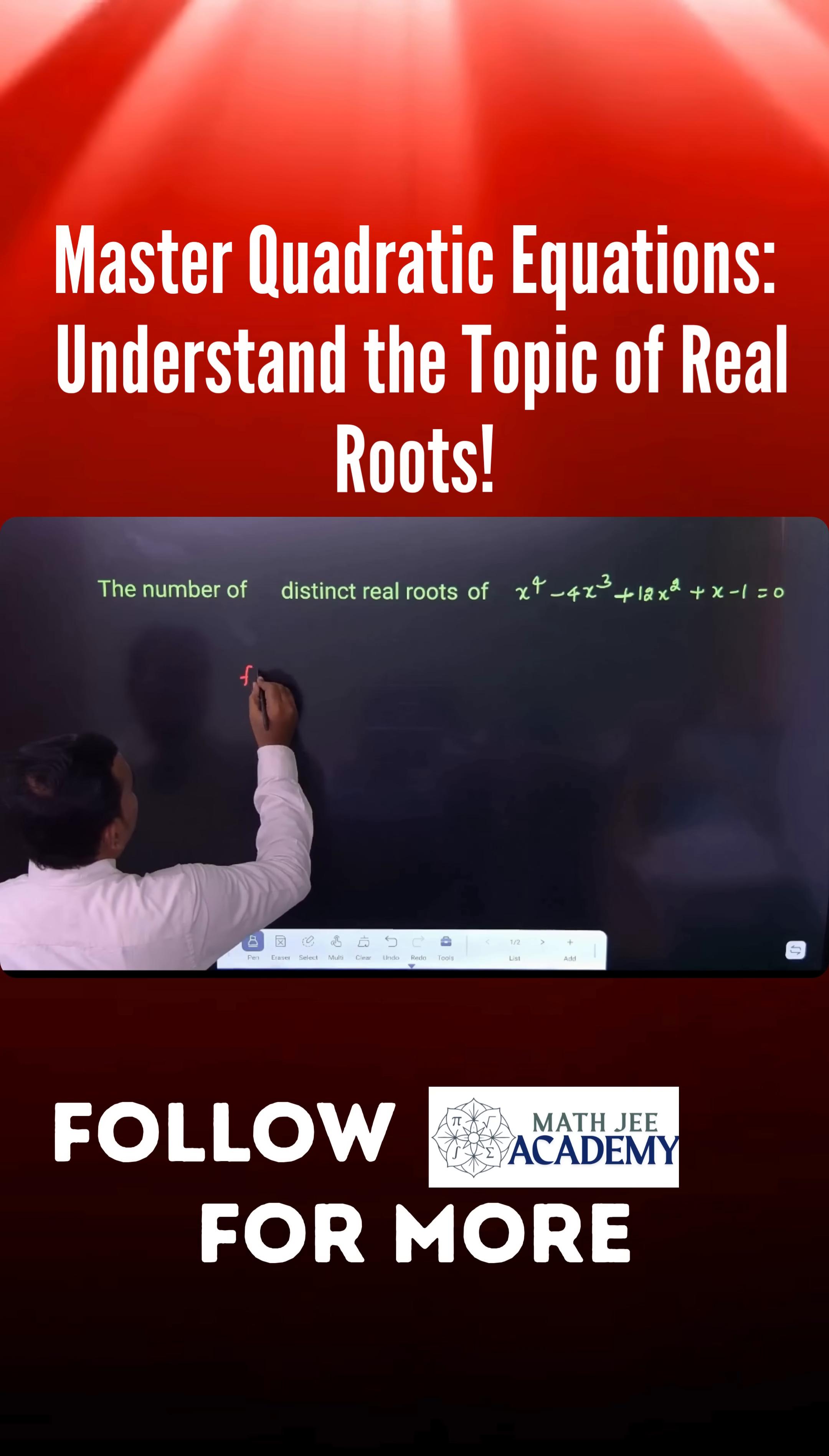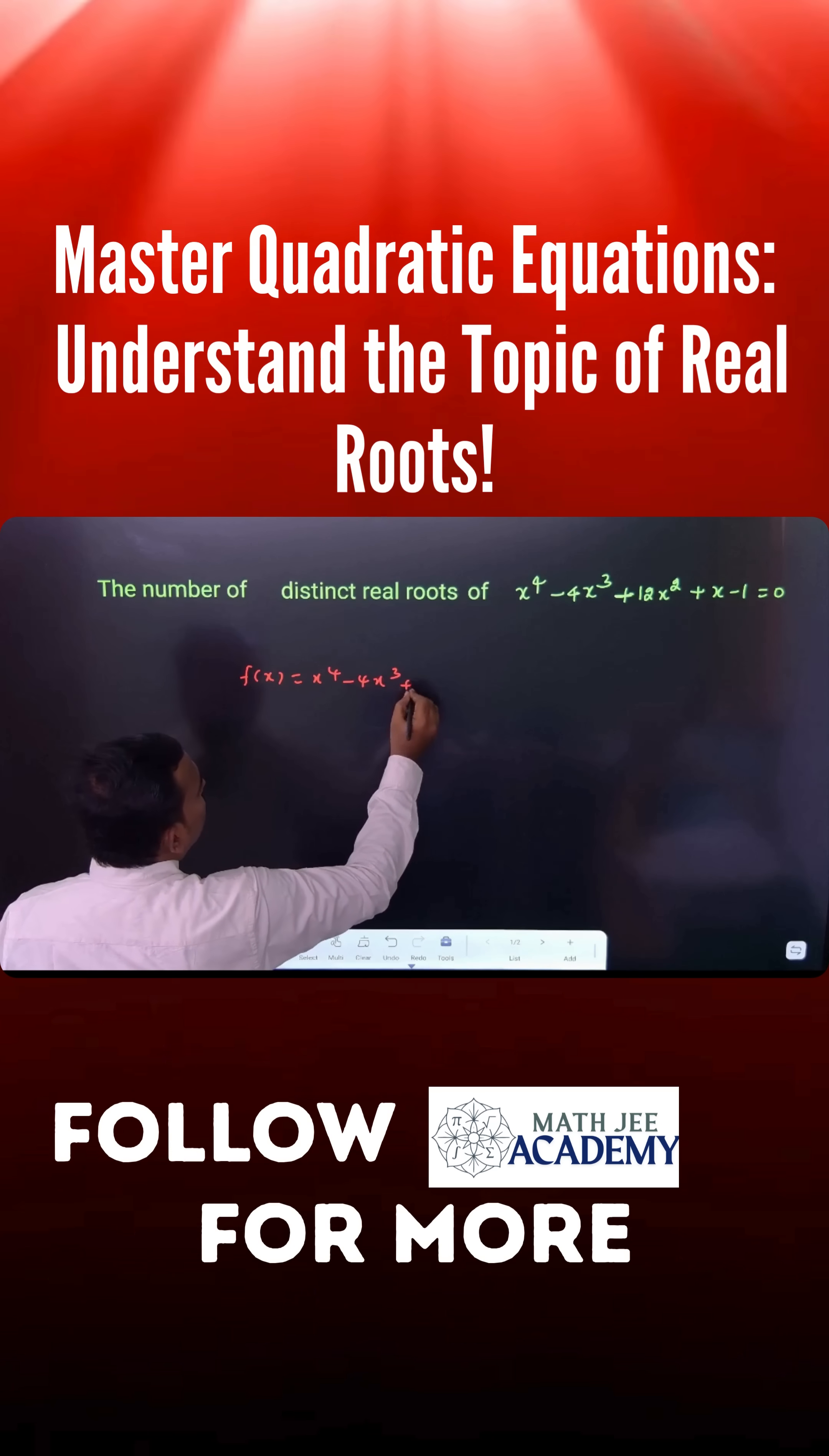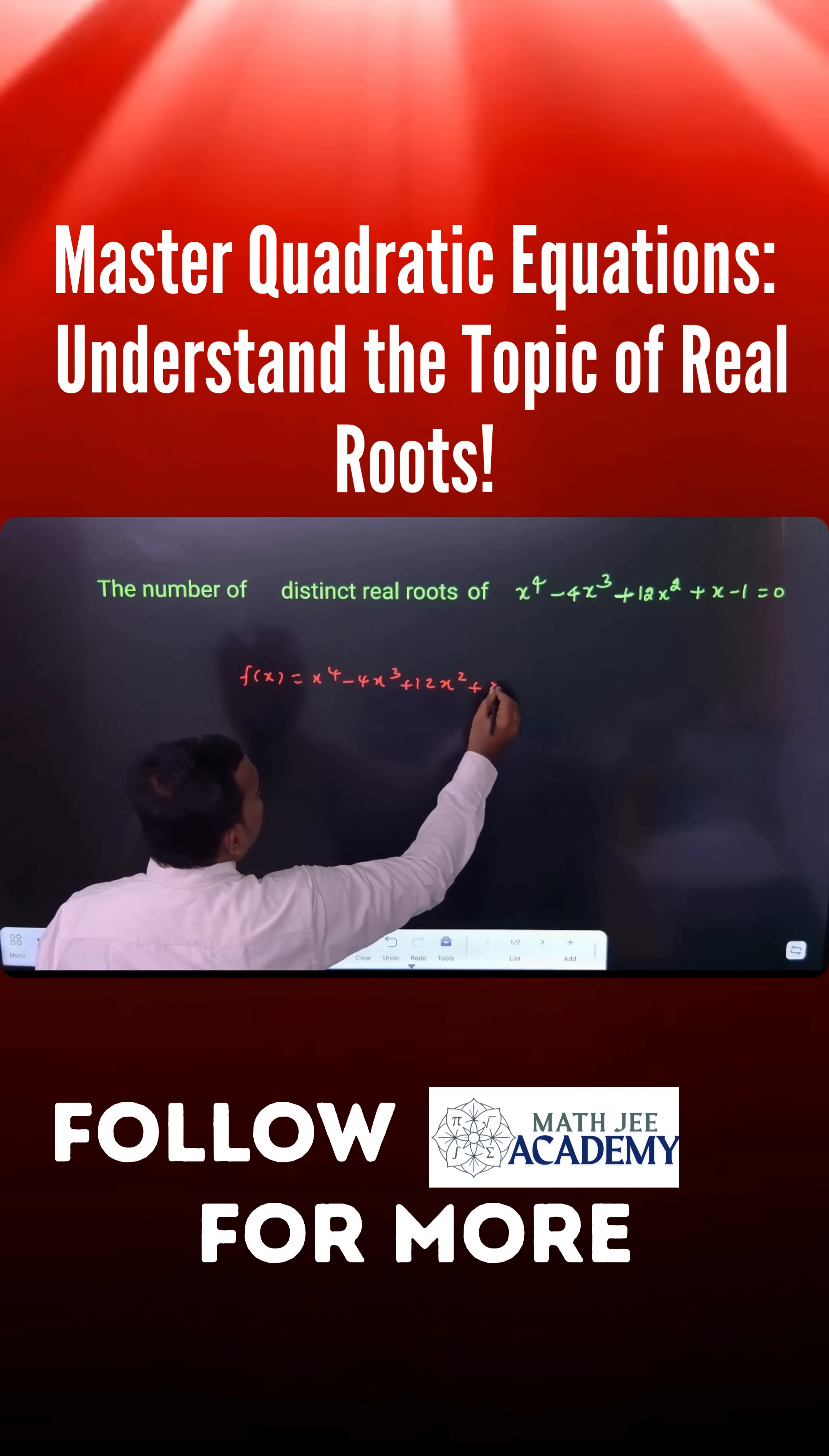Consider this function f(x) = x^4 - 4x^3 + 12x^2 + x - 1.